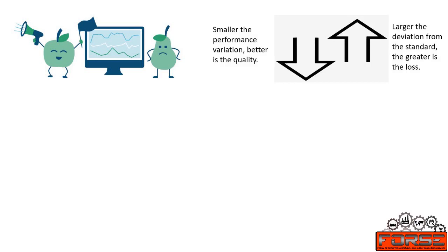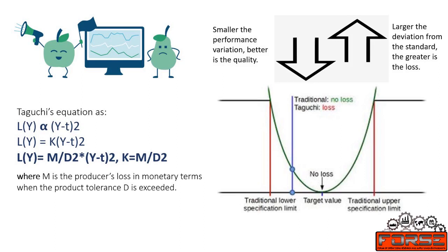Smaller the performance variation, better is the quality. Larger the deviation from the standard, the greater is the loss to society — that is, greater the loss to consumer and producer together. According to Taguchi, the loss is directly proportional to the square of the deviation from the target, expressed as: L(y) ∝ (y − t)². To convert it to equality, we multiply with a constant k, giving L(y) = k(y − t)². Expanding by substituting k = m / (2d), where m is the producer's loss in monetary terms when the product tolerance d is exceeded, the final equation becomes L(y) = (m / 2d) × (y − t)². The graphical representation of L(y) when performance y deviates from the desired target t is as shown in the figure.